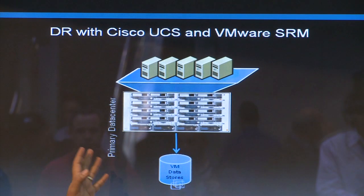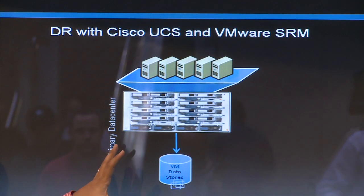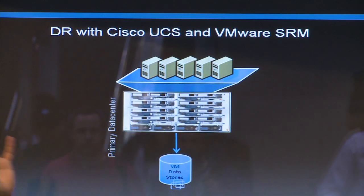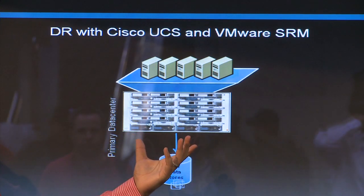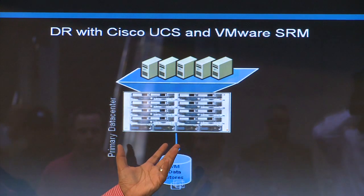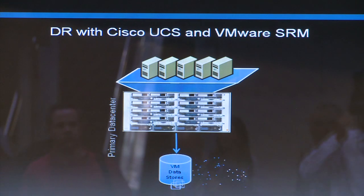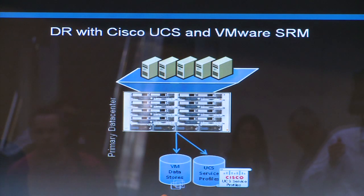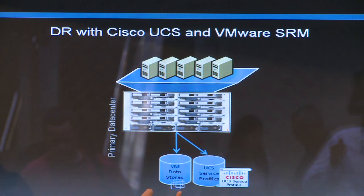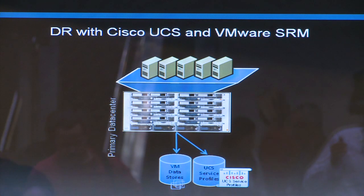Now we're going to look at the UCS part of the picture here. Imagine the same setup — instead of your conventional blade server or rack mount server, you have a UCS blade chassis. Now you have your virtual machines on the shared storage, and you also have something called UCS service profiles.